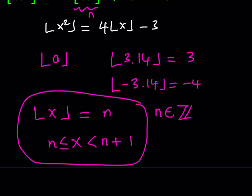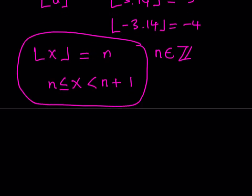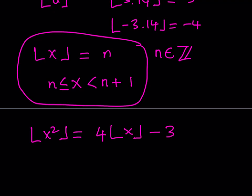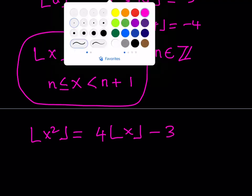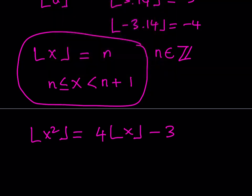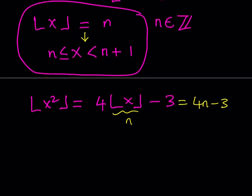Now, after making this substitution, I can isolate my floor value of x squared, and this is going to give me 4 times the floor value of x minus 3, and we call this n. So the floor value of x squared is going to be 4n minus 3. If the floor value of x squared is equal to 4n minus 3, and n is an integer, then 4n minus 3 is also an integer.